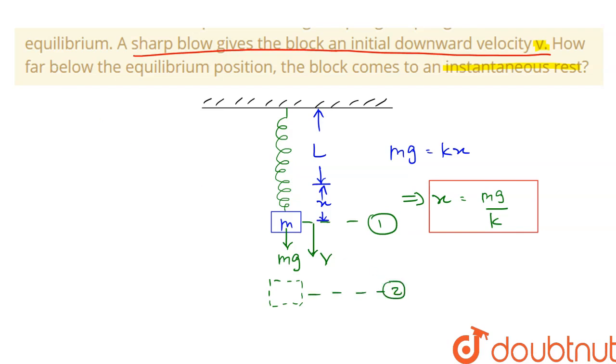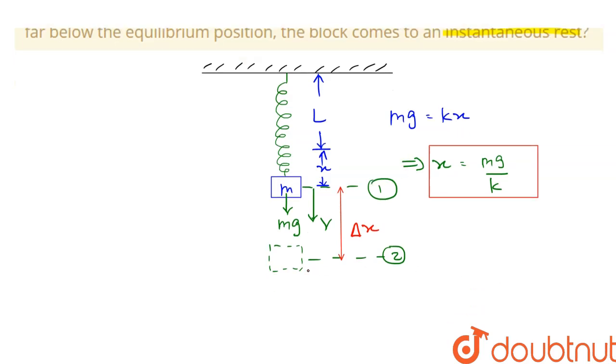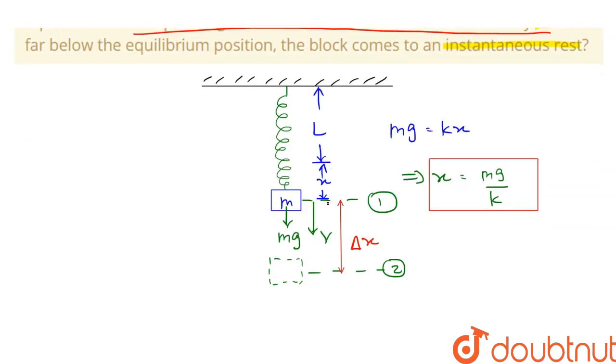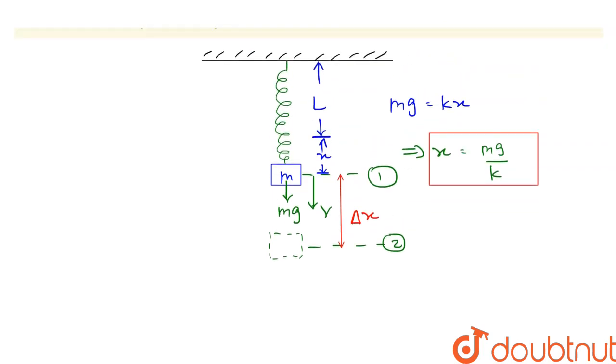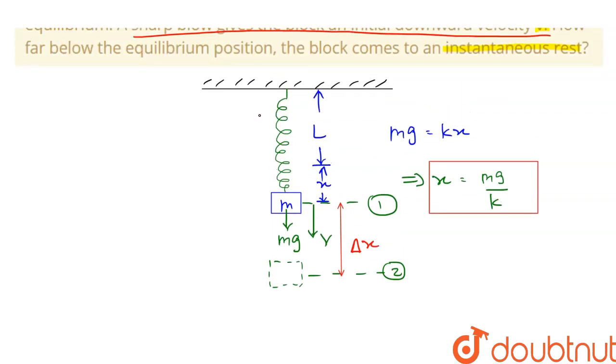At position 2, which is delta x below position 1, the velocity will become 0. And that kinetic energy that it had initially is converted into the potential energy of the spring. And also as the mass m is going downwards, there will be loss of gravitational potential energy that is also absorbed by the spring.